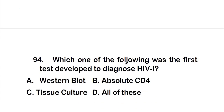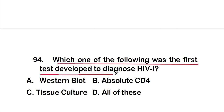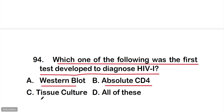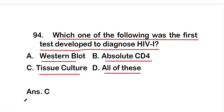Question number 94: which of the following was the first test developed to diagnose HIV-1? Options are: option A, western blot; option B, absolute CD4; option C, tissue culture; option D, all of these. The right answer is option C — tissue culture was the first test developed to diagnose HIV-1.